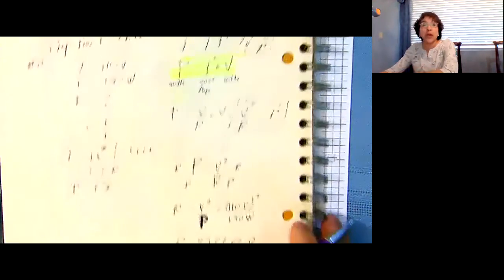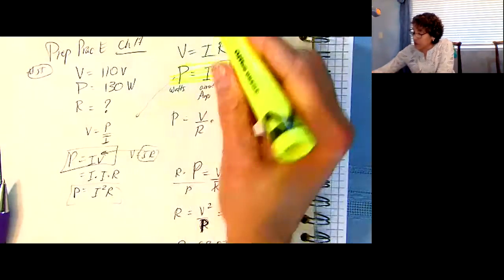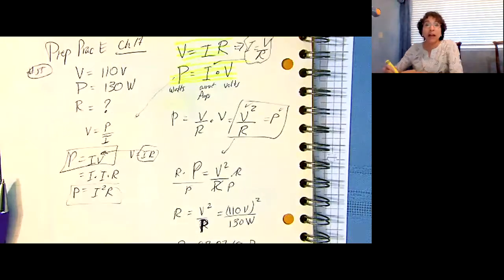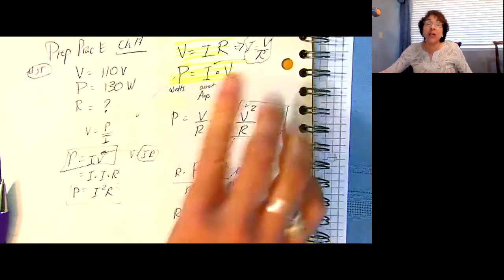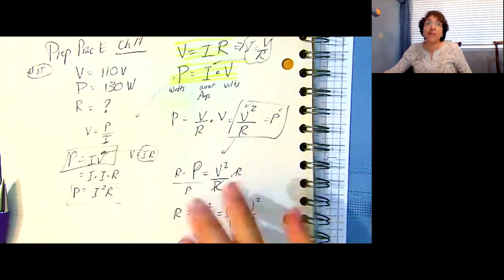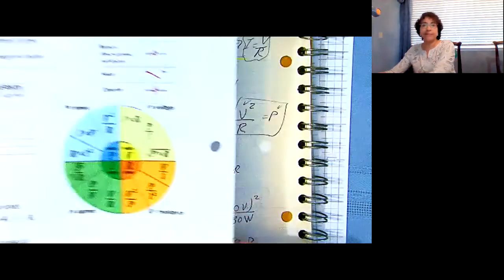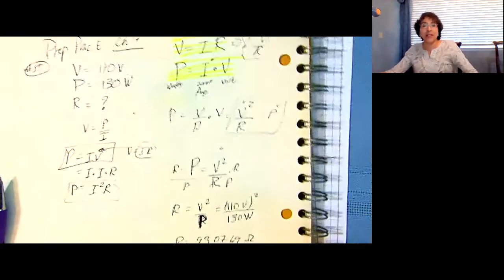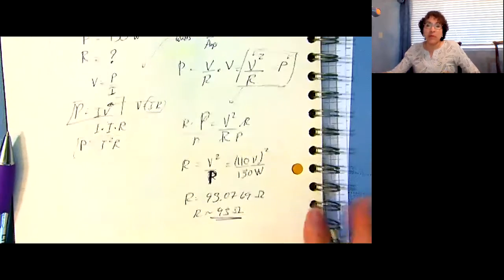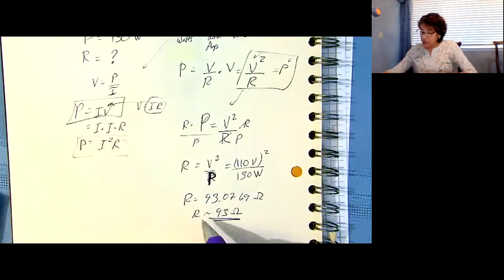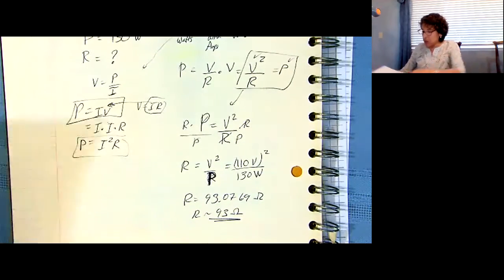I just was trying to make a point that based on V equals IR and P equals IV, you can derive all the other versions, and you also have your notes summary page that has them as well, but I always end up deriving them, just to be sure. So that's the first one.